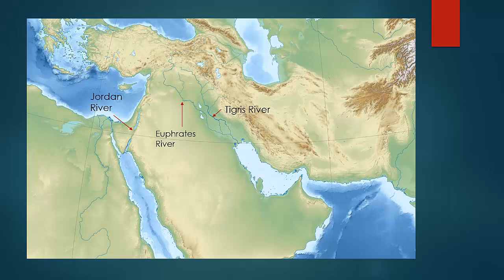Next is the Suez Canal, west of the Jordan River. South of the Suez Canal is the Red Sea. On the other side of the Arabian Peninsula is the Persian Gulf. The exit of the Persian Gulf is the Strait of Hormuz, which drains into the Arabian Sea.